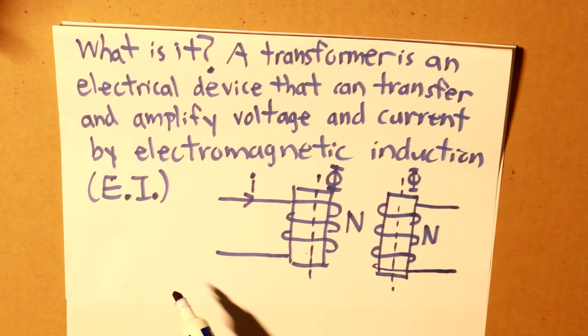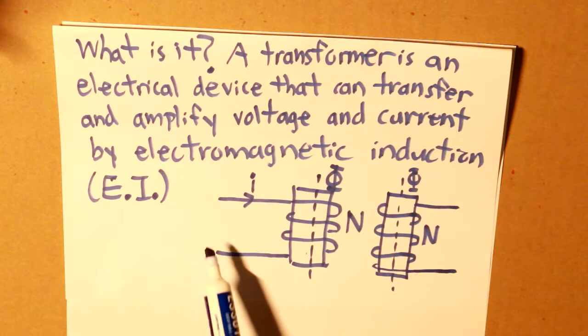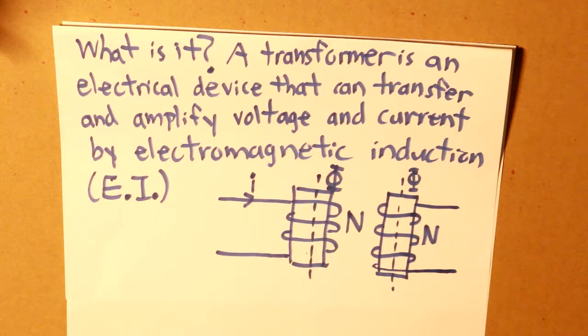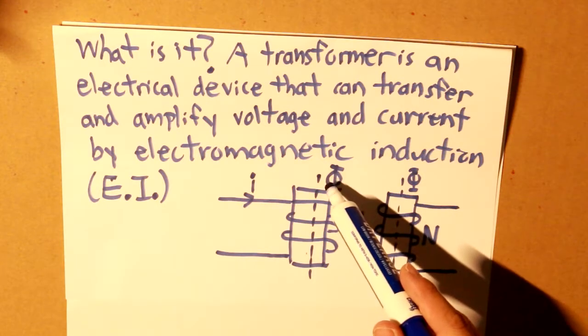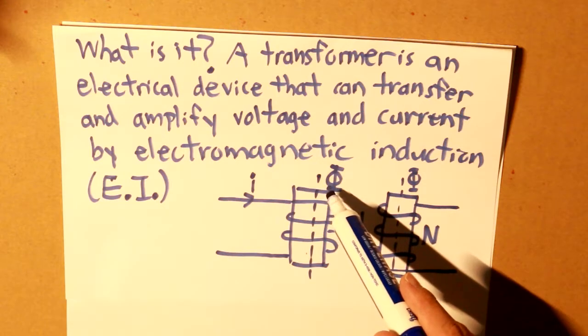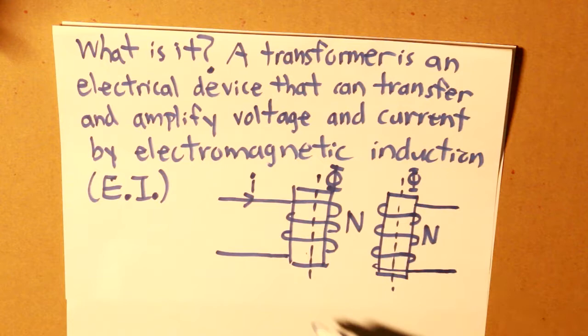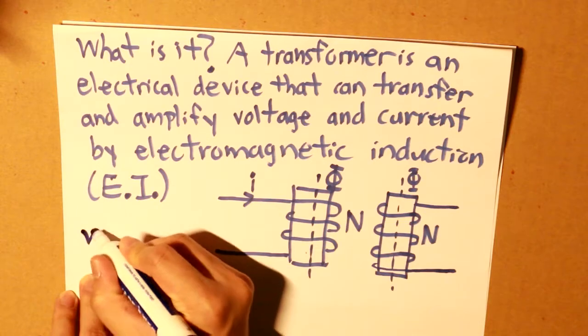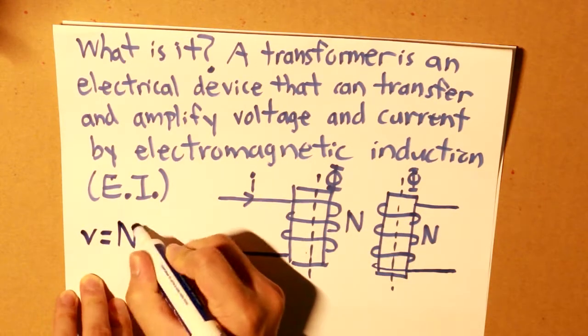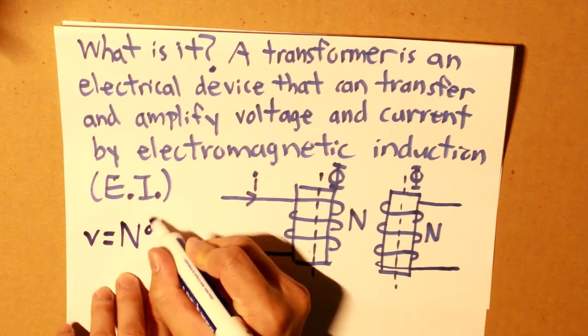Now as I've mentioned before in my video about flux, flux is created when a current flows through a coil wrapped around a magnetic core. Now that flux that is created is perpendicular to the current that is flowing through the coil. Voltage will be created by the number of turns of that coil multiplied by the changing of the flux.